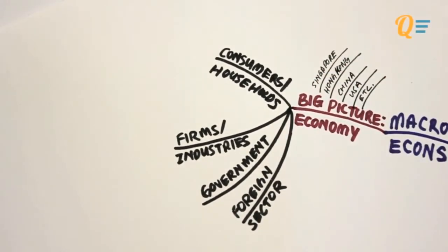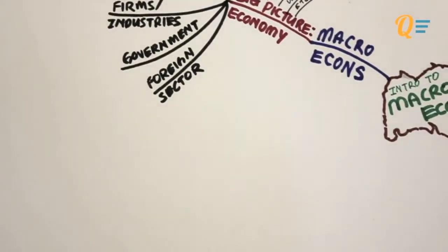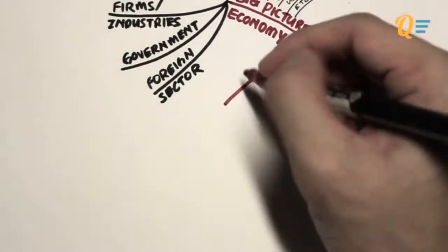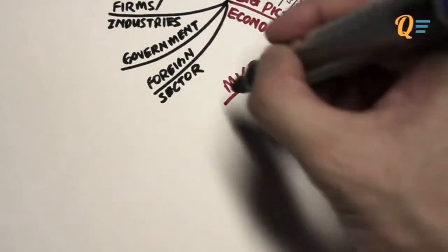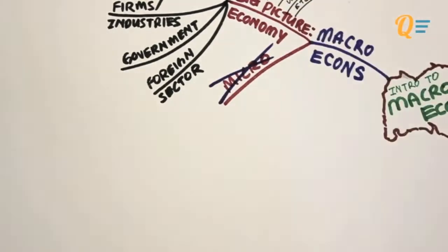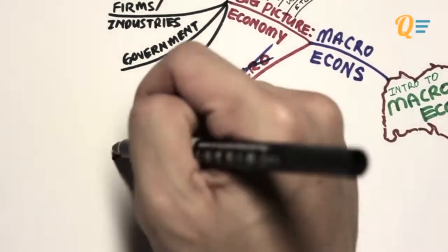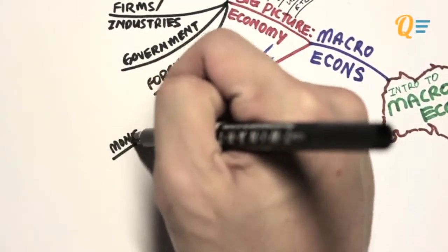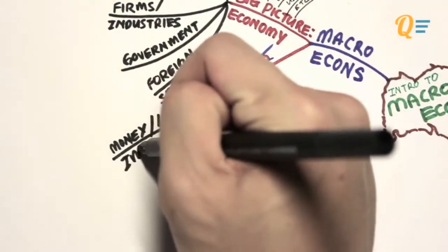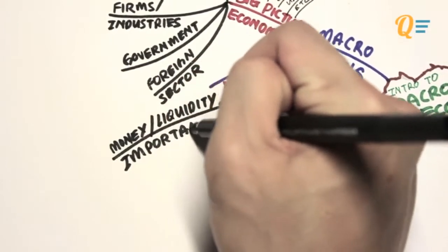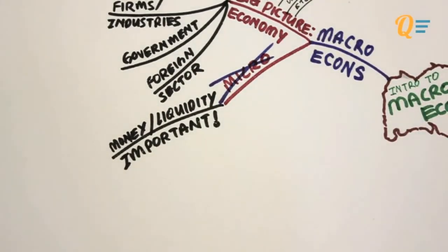As we live in a more globalized world, there are always relationships between different countries, and these things require economic analysis as well. How this is different from microeconomics is that money takes a whole new level of importance in our analysis. Money is also known as liquidity.